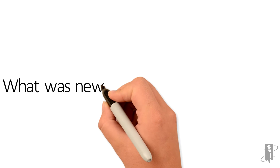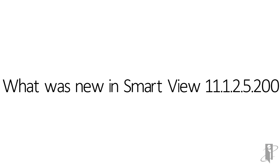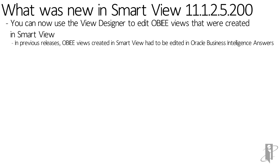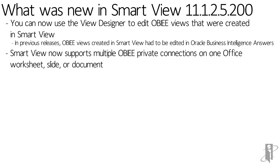Moving on to the dot 200 release, a lot of enhancements were for OBIEE, with a couple of more general ones. You can now use the view designer in OBIEE to edit views that were created in Smart View. In prior releases, you could do the initial design, but once saved, you had to go back to Answers to make changes — now you can come back in and make changes directly. Smart View also now supports multiple OBIEE private connections on one worksheet, slide, or document, depending on whether you're in Excel, Word, or PowerPoint.